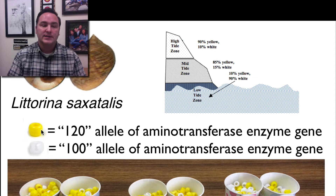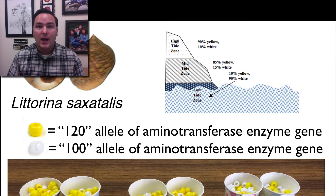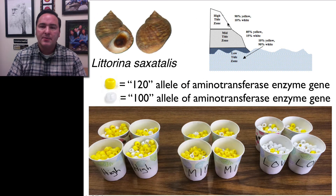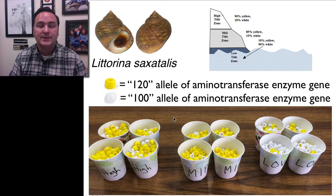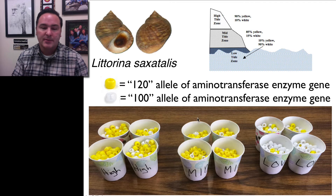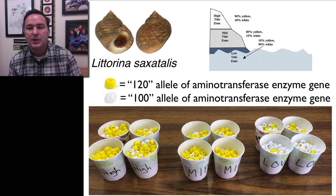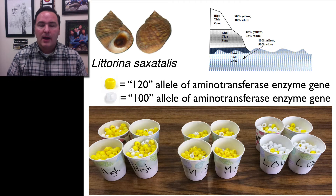We're going to simplify this by saying the 120 allele is the yellow bead and the 100 allele is the white bead, so we can watch simulations and track allele frequency over time. At the high tide zone, there's 90% yellow and 10% white, represented by these four cups. The mid tide zone has about 85% yellow and 15% white, and the low tide zone has about 10% yellow and 90% white. We're going to watch what happens to allele frequency through time.